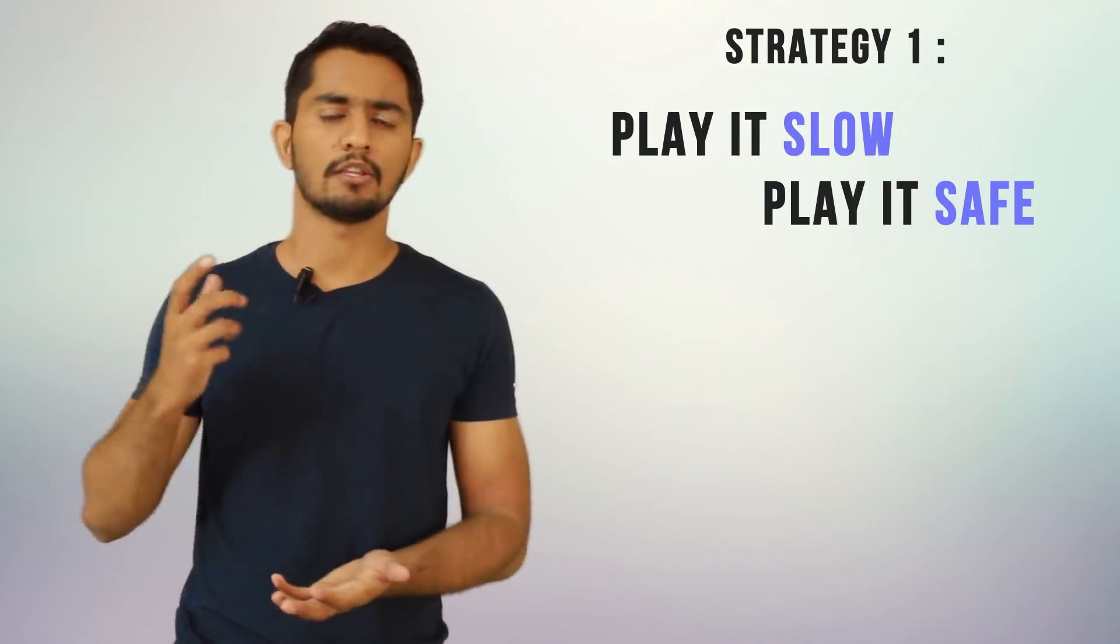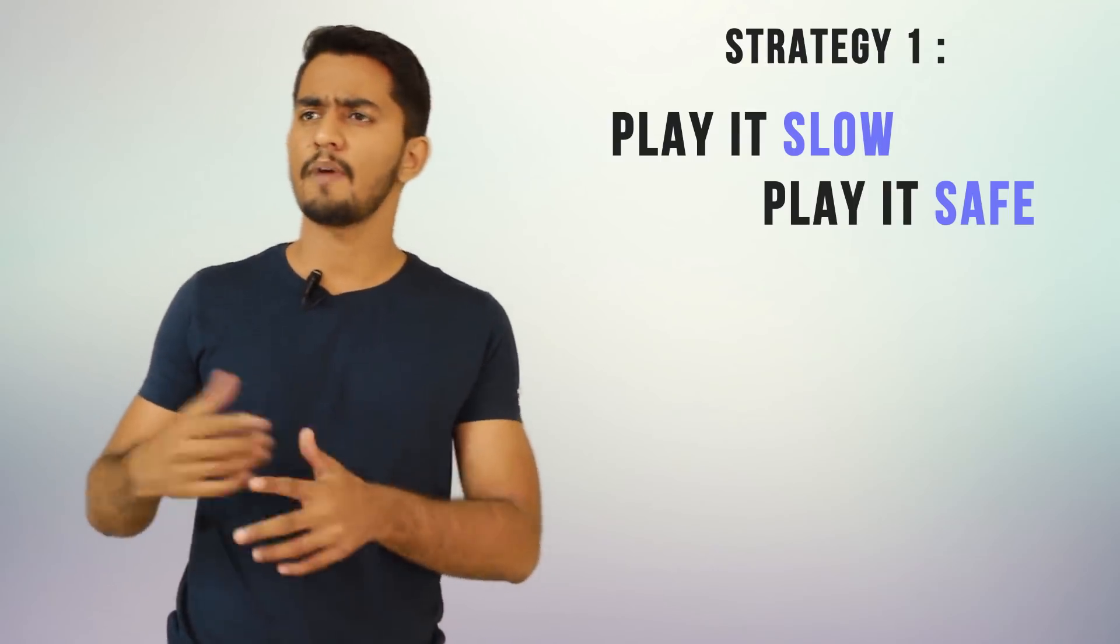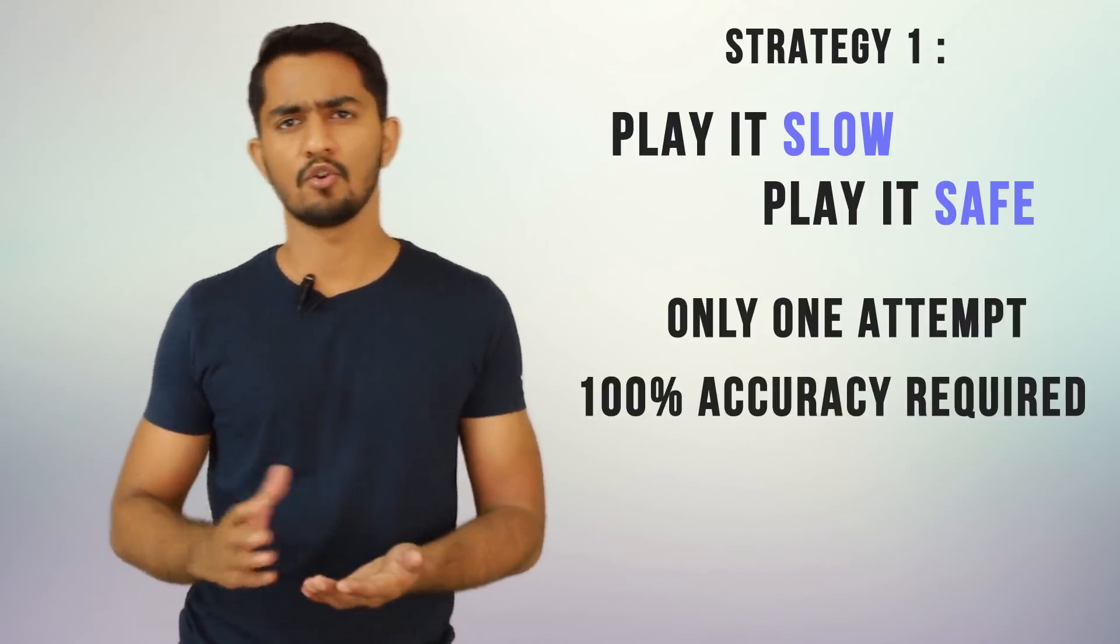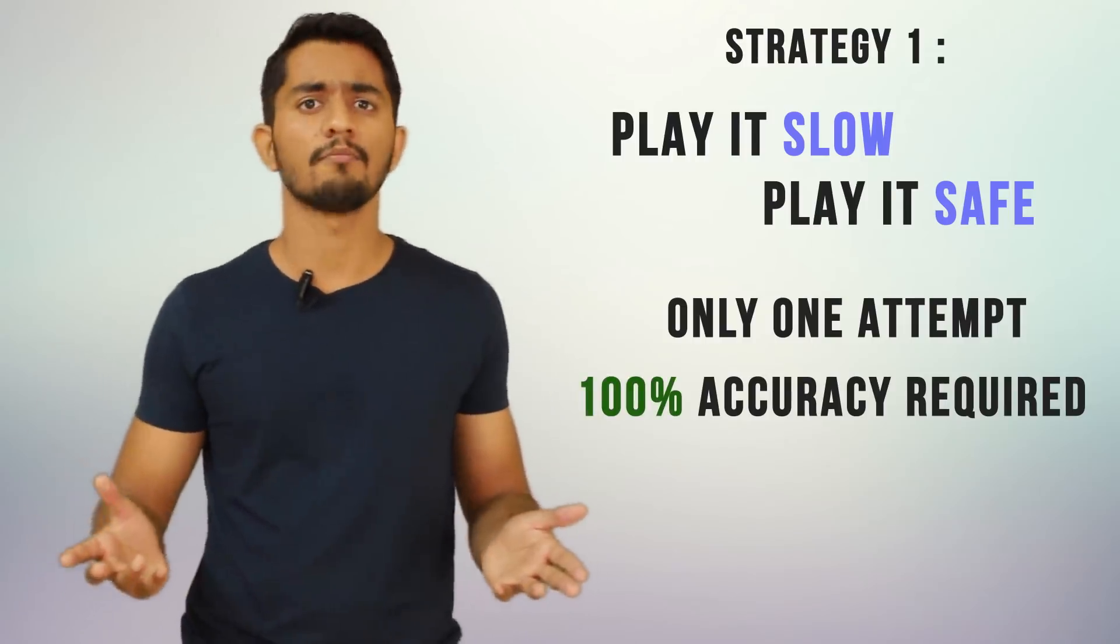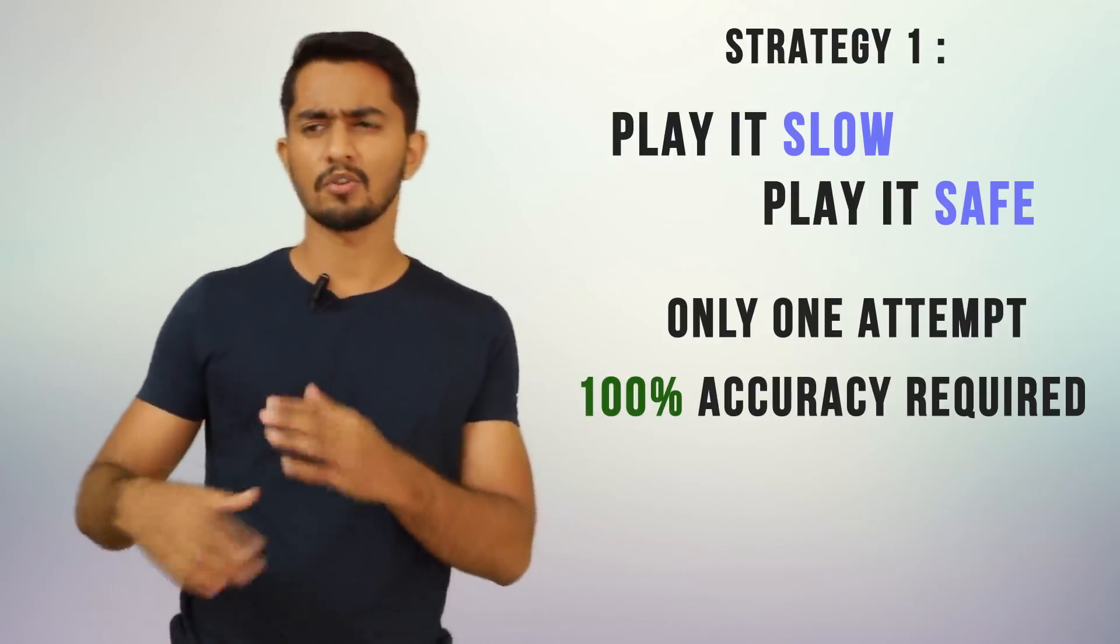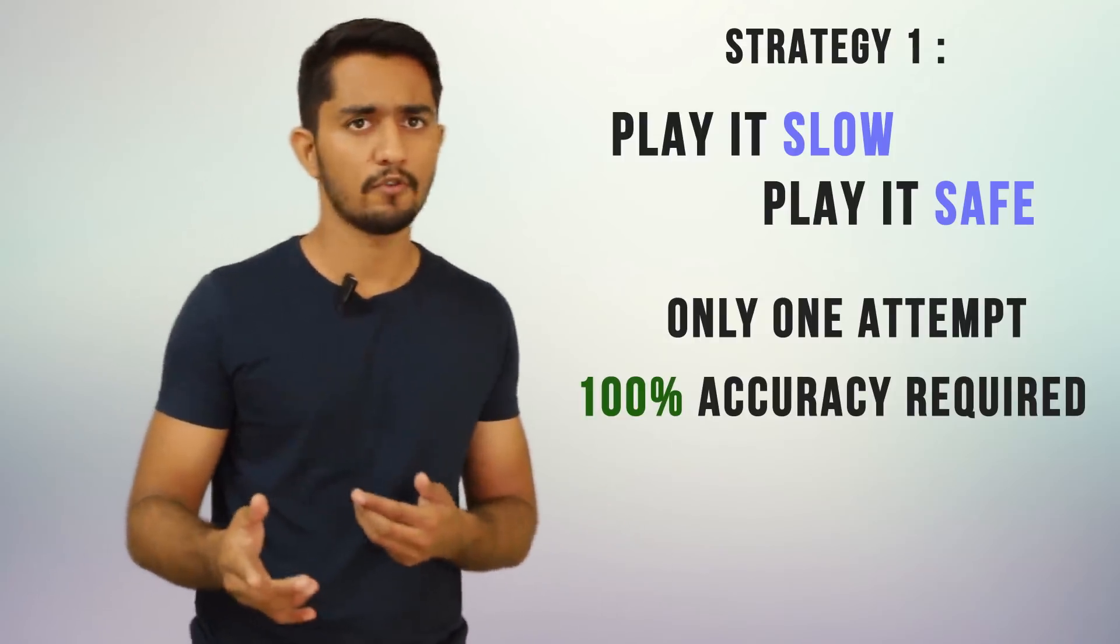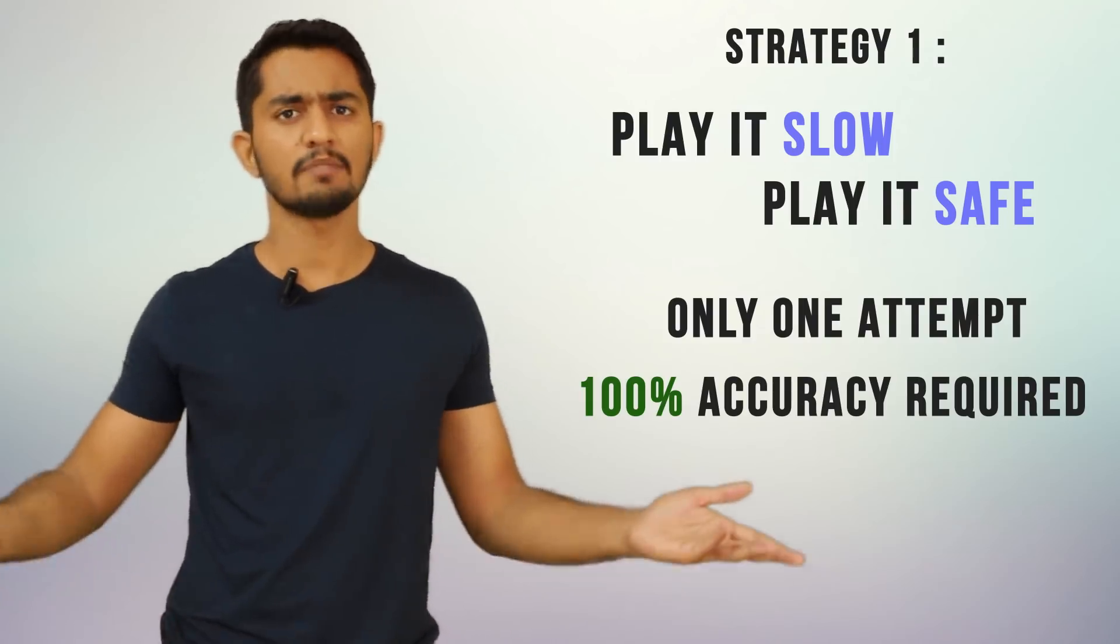Play it slow means that in the 35 minutes allotted to you to solve 20 questions, you use around 30 to 32 minutes to solve each question slowly, safely, double checking your answer whether it is right or not. You end up using 30 to 32 minutes and you have no time to go to the questions again. If you're pretty confident that all your answers are correct then this may work for you, but this is certainly what I wouldn't recommend.